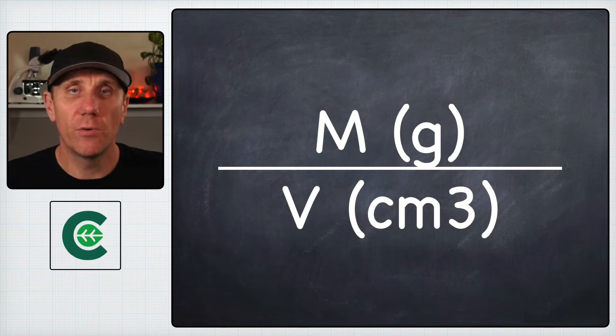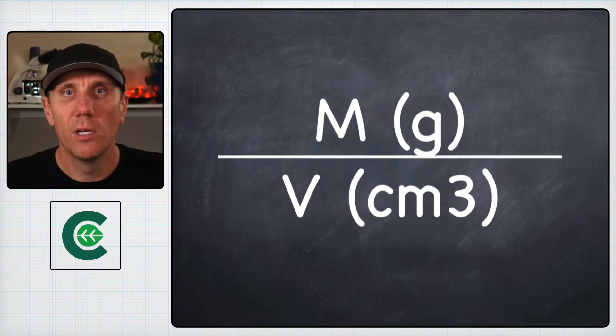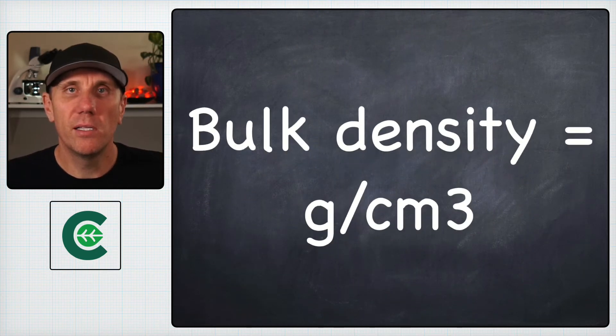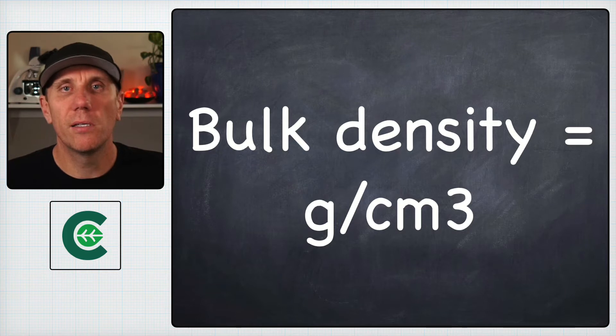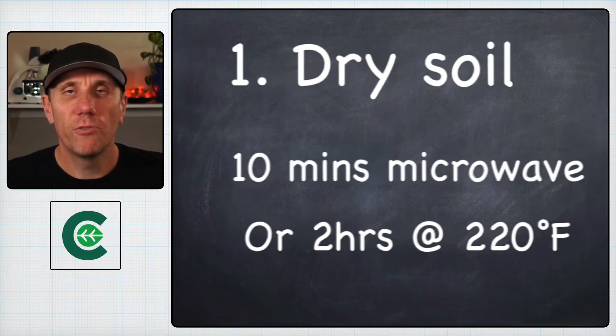For this exercise, the mass is represented in grams and the volume in cubic centimeters. Therefore, our bulk density is a value represented in grams per cubic centimeter.